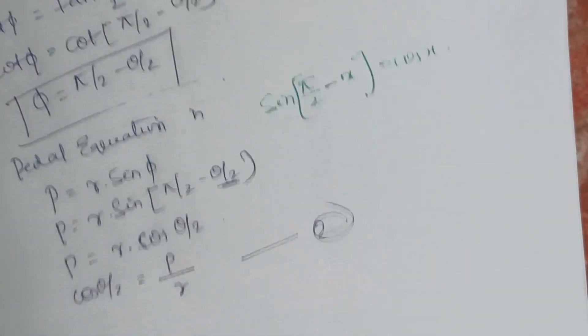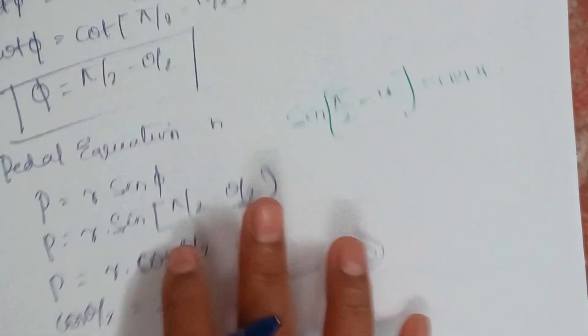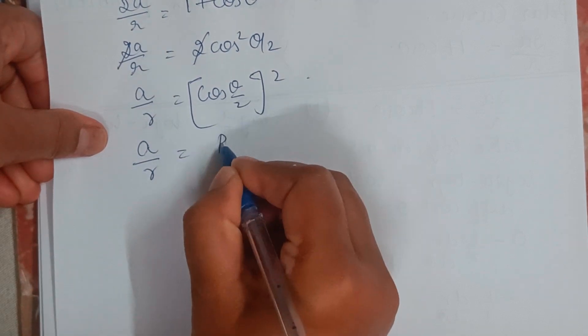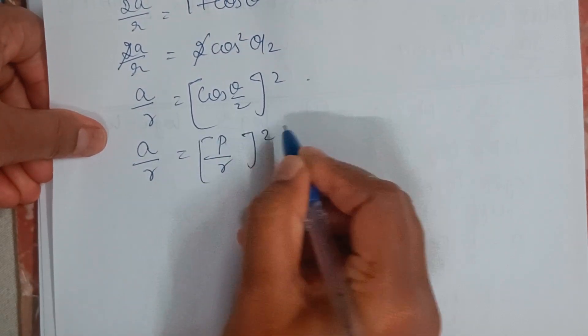What is cos theta by 2? Cos theta by 2 is P by R. So A by R equals P by R, the whole square.